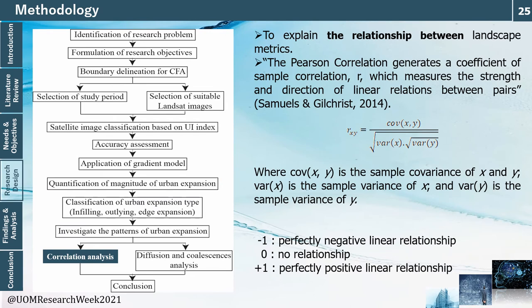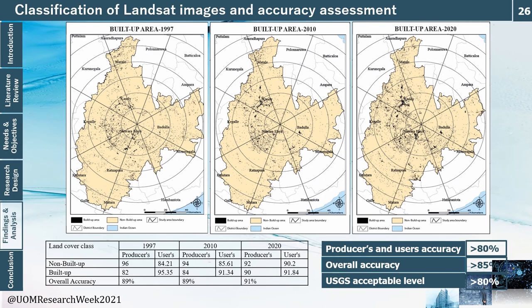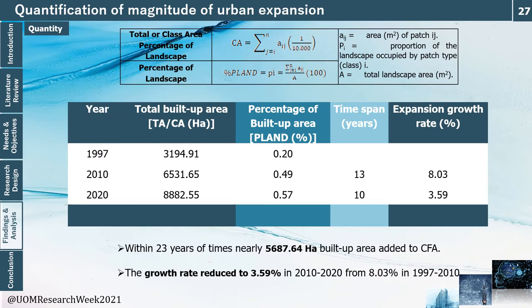Regarding the findings, the accuracy assessment showed that both built-up and non-built-up areas have producer and user accuracy greater than 80%, and overall accuracy greater than 85%, which meets the USGS guideline of an acceptable level above 80%. In terms of quantity, within 23 years, nearly 5,687.64 hectares of built-up area were added to the Central Fragile Area. However, as a percentage of the total landscape, this is less than 1%, meaning non-built-up areas still dominate — a positive sign.